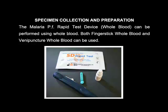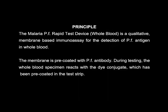The Malavia PF Rapid Test device can be performed using whole blood. Both finger stick whole blood and venipuncture whole blood can be used. The Malavia PF Rapid Test device is a qualitative membrane-based immunoassay for the detection of Plasmodium falciparum antigen in whole blood. The membrane is pre-coated with Plasmodium falciparum antibody.